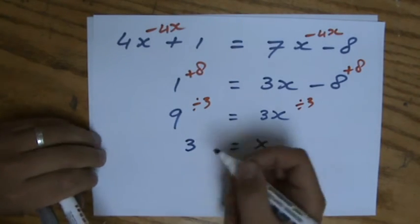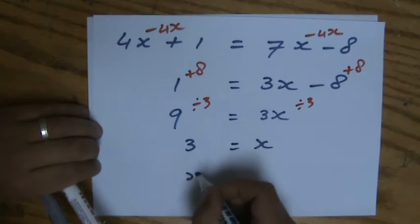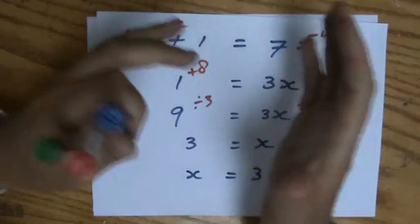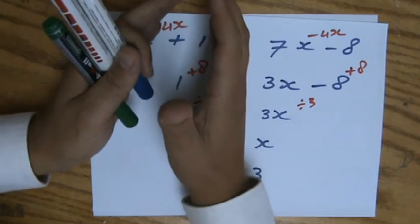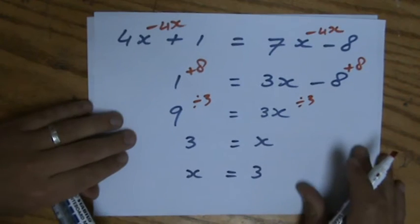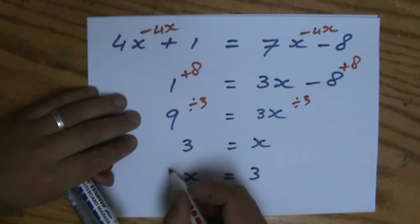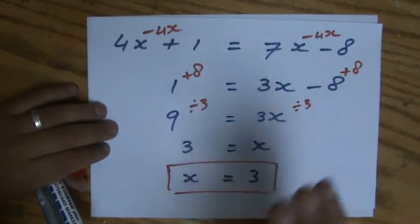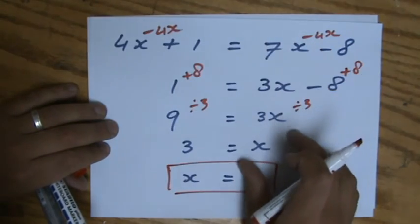Yes, I know it says 3 equals X. For that, that means that X equals 3. You can turn it around. Now, if you did put X on the left side of the equal sign, you would also get 3 as a final answer if you work accurately and properly. But with those negative signs, people make mistakes.